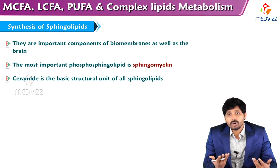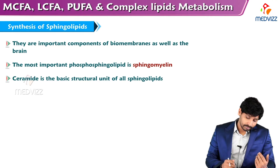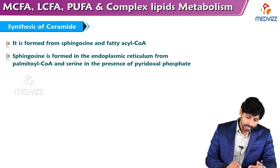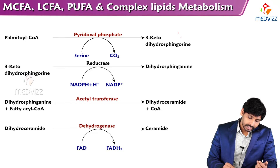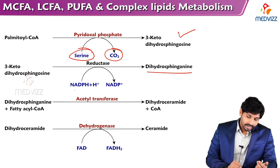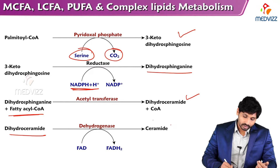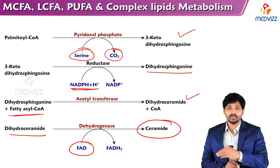Sphingolipids are an important component of biomembranes as well as the brain. The most important phosphosphingolipid is sphingomyelin. Ceramide is the basic structural unit of all sphingolipids. Ceramide is formed from sphingosine and fatty acyl-CoA. Sphingosine is formed in the endoplasmic reticulum from palmitoyl-CoA and serine in the presence of pyridoxal phosphate (PLP), with removal of CO2. Alpha-keto dihydrosphingosine is converted to dihydrosphingosine with NADPH involvement. Adding fatty acyl-CoA forms dihydroceramide, and removal of two hydrogens (accepted by FAD to form FADH2) converts dihydroceramide to ceramide.